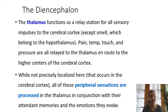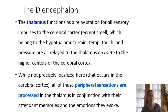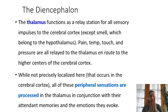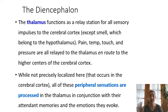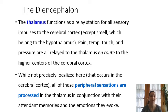The thalamus is the largest part of the diencephalon and basically acts as a relay station. The diencephalon sits right on top of the brainstem, which is an extension of the spinal cord. So signals coming up through the spinal cord pass through the brainstem and land in the thalamus, which decides where to send that information. It acts like a router, taking incoming sensory information from the body and sending it to the correct places in the cerebral cortex.